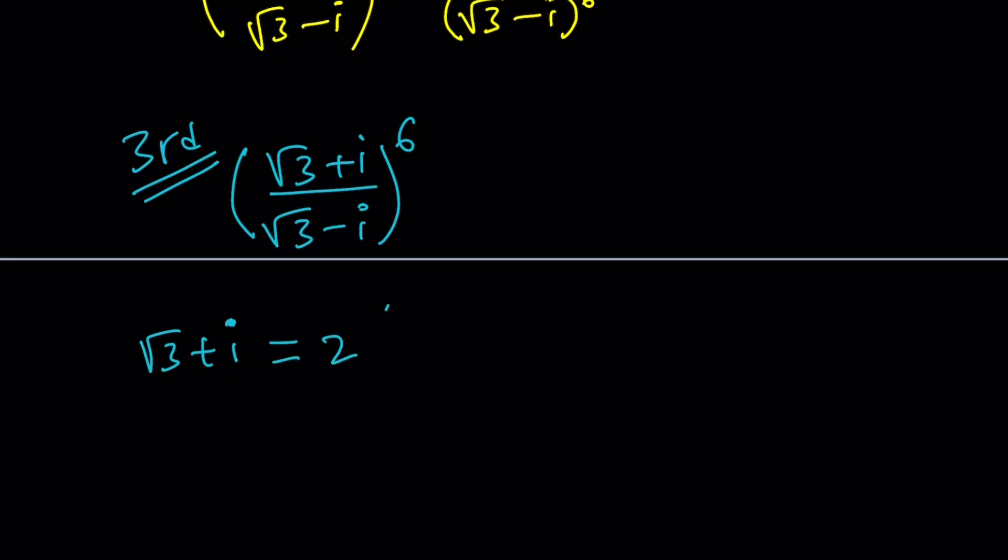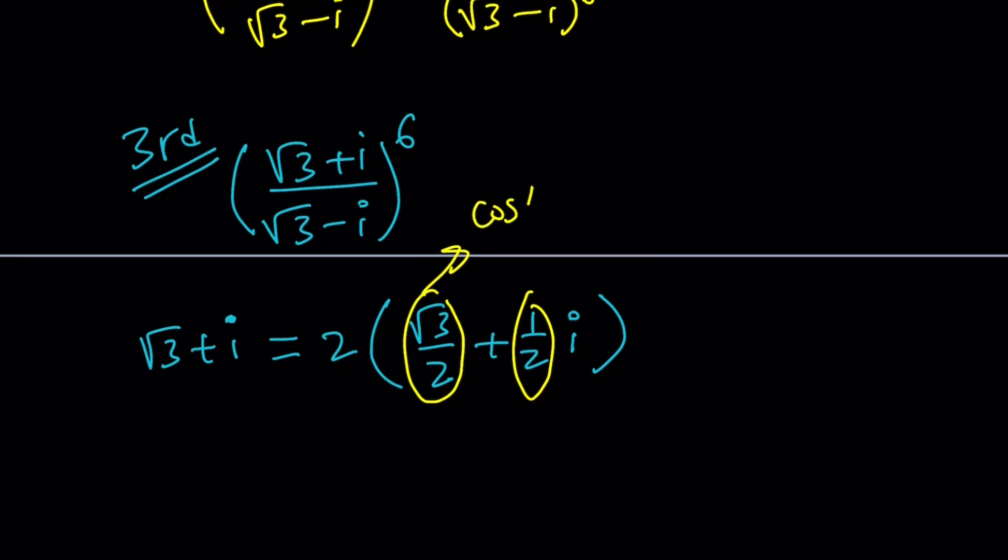I'm going to take out a 2, which is the modulus. This is going to give me root 3 over 2 plus 1 half i. And then I need to find two numbers. Whose cosine is this? And whose sine is this? You know that? It's pi over 6, right? 30 degrees.